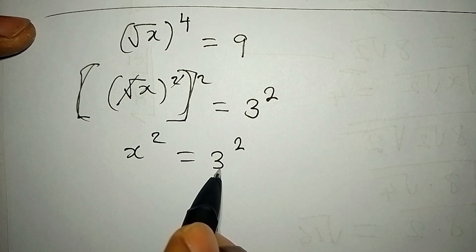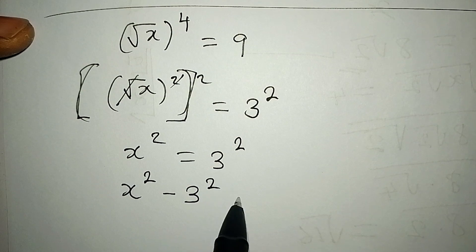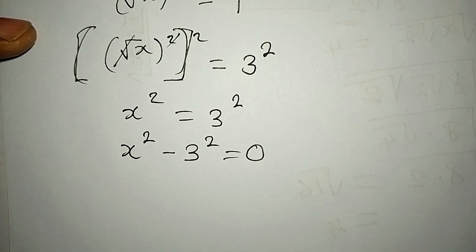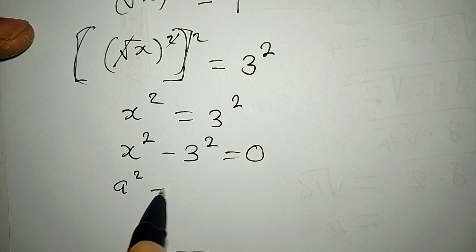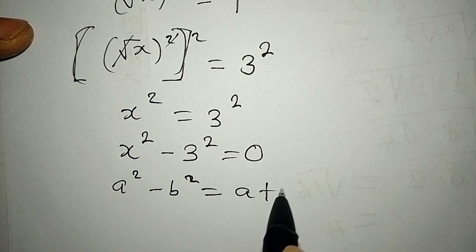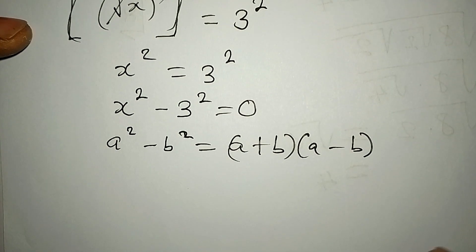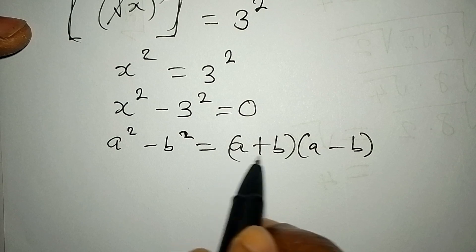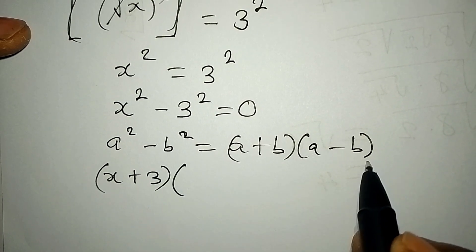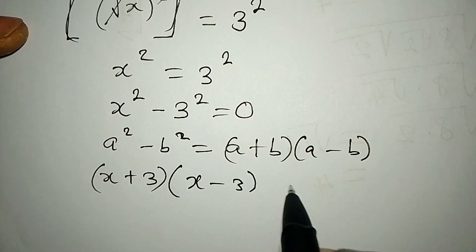Now let's bring this to the left: x to the power of two minus three to the power of two equals zero. Now we can apply difference of two squares. Your a squared minus b squared is equal to a plus b into a minus b. Hope you can remember that. So in place of a plus b I write x plus 3, and in place of a minus b I write x minus 3, and this is equal to zero.